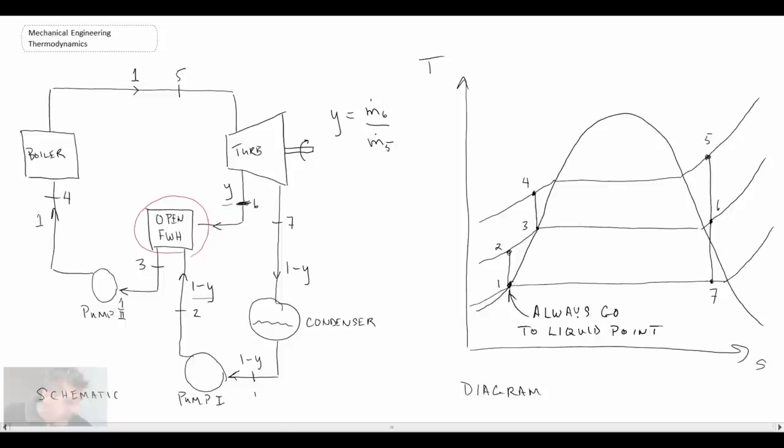So we go there and with this idea of mass fraction y, what we have going from 7 to 1, we can write 1 minus y and then what is going from 6 down to 3 is y. And so that would be the percentage of mass that we are stripping out and is then going into our open feed water heater. So that is the T-S diagram as well as the process schematic with the open feed water heater.